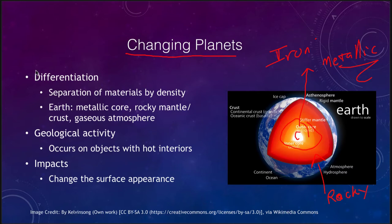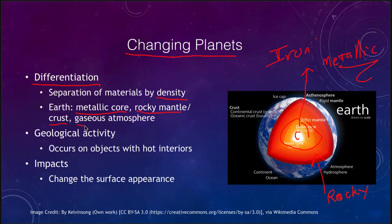When planets form large enough, they undergo a process called differentiation — a separation of materials by density. The Earth was at one point entirely molten, and that meant the denser materials were able to sink down to the core while the less dense materials rose to the surface. This gave us an Earth with a metallic core at the center, a rocky mantle and crust with denser rocks deeper down and lower density rocks near the surface, and a low-density gaseous atmosphere. This is similar to how water and oil separate by density.